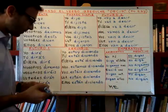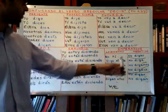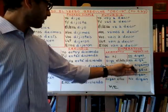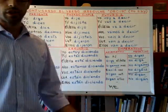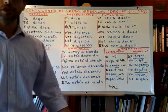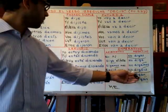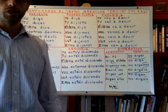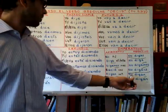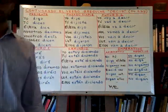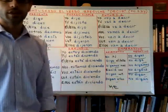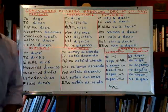In the negative: no digas — don't say (tú). No diga — he doesn't say. No digamos — let's not say. No digáis — you don't say (vosotros plural). No digan — you don't say (ustedes). And no digan — they don't say, or they better not say.